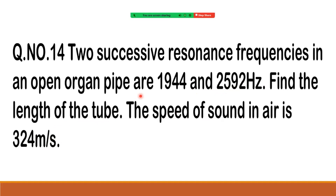See first how we have to start this problem. Two successive frequencies are given for an open organ pipe. An open organ pipe means we get all frequencies. So this can be taken as the nth harmonic, and then this will be the (n+1)th harmonic, because the condition given is successive resonant frequencies.